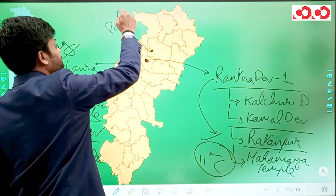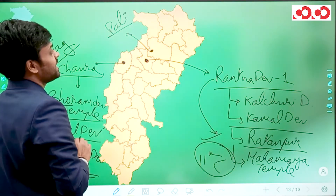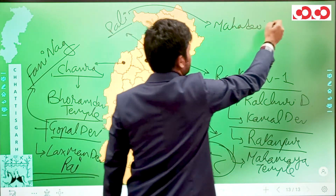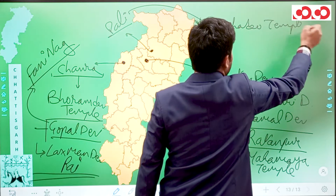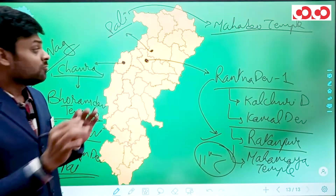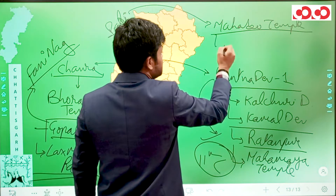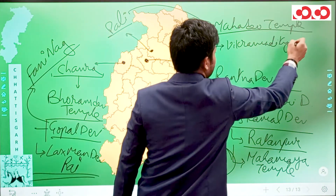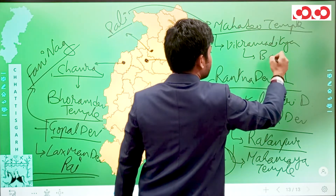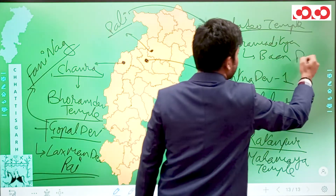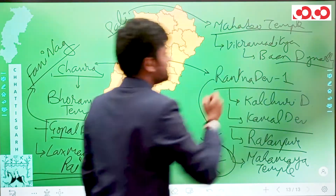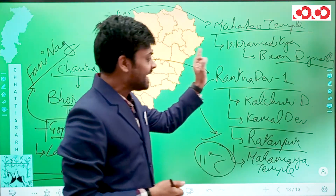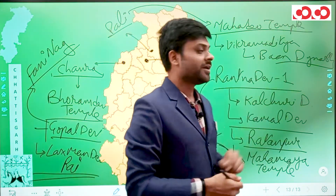In the Korba district we have a city known as Pali. In Pali is situated the famous Mahadev temple, which was actually built by King Vikramaditya of the Baan dynasty. So this famous Mahadev temple of Pali was built by King Vikramaditya of the Baan dynasty.